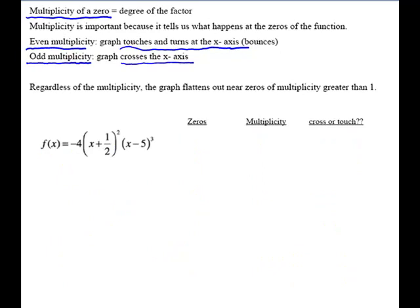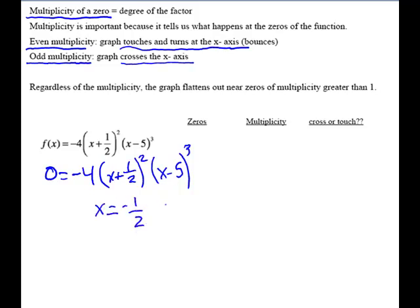This next one is already factored for us. We can get the zeros off. 0 = -4(x + 1/2)²(x - 5)³. You're not going to get a solution from this constant. From this one, x is going to equal negative 1/2. From this one, x will equal positive 5.